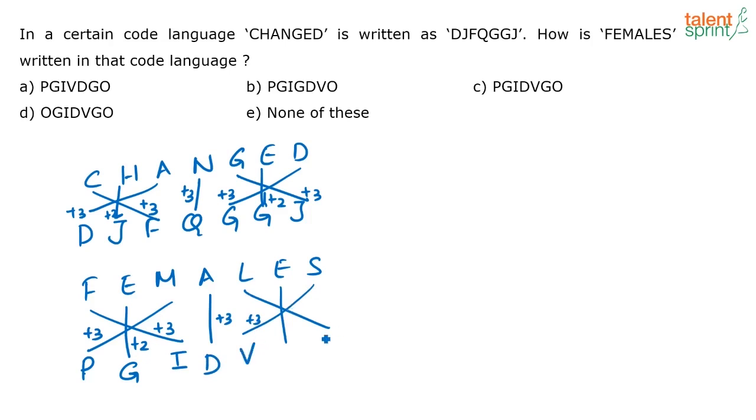Plus 3. So, E, F and G. So, again, here it is plus 3 means it is going to be D. Plus 3 means S, T, U and V. Here it is again plus 3. O. Plus 2. G. So, that is the answer that you are looking at. That is P, G, I, D, V, G, O. Option C.